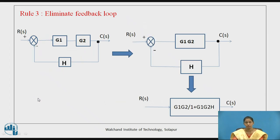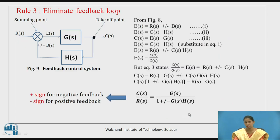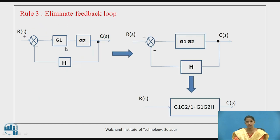As discussed, when G1 and G2 are in series they are multiplied, and then if there is a feedback loop, the combined system is converted into a single block. This is the output when the full system with the given input is reduced to a single block.